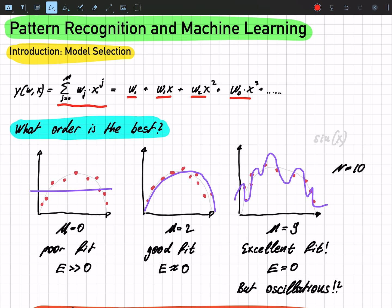So this is the polynomial where we will adjust the parameters w to fit the polynomial as close as possible to the given data.